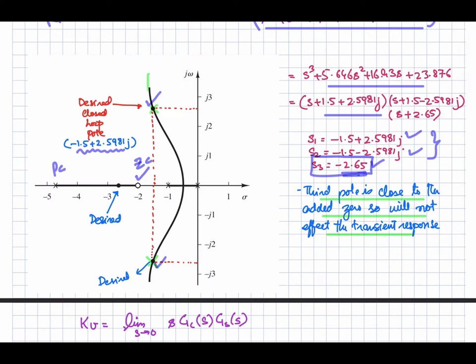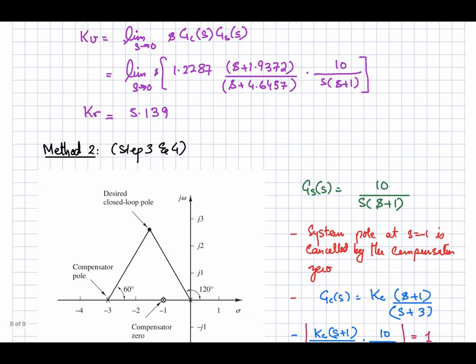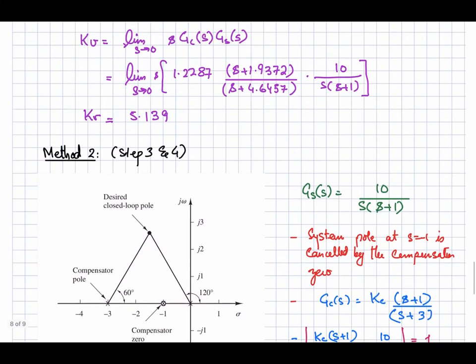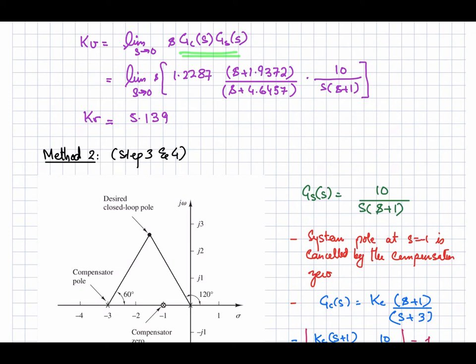Now let's calculate the static velocity error Kv for this compensated system using Method 1. Substituting all values gives Kv = 5.13.